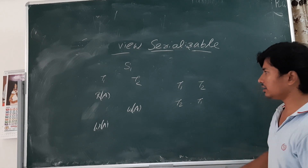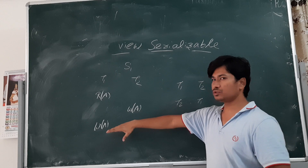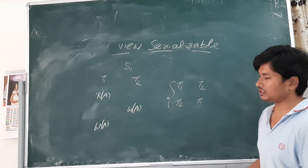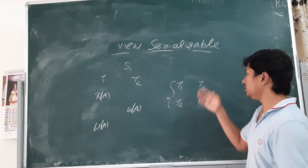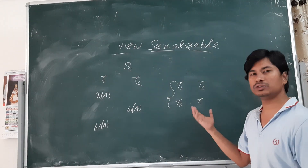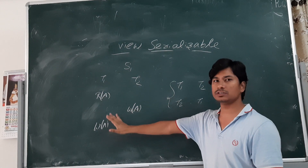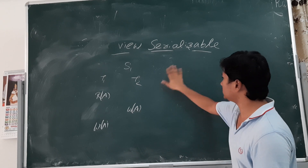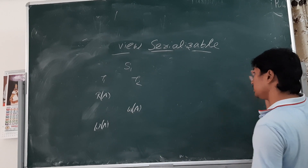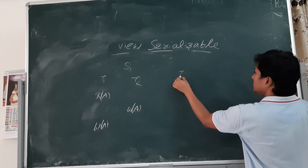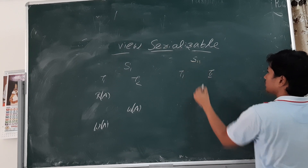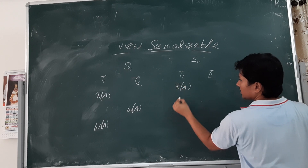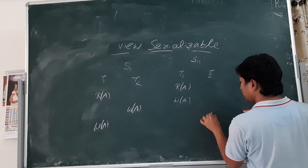A schedule is view serializable if it is view equivalent to any of these two serial schedules — at least view equivalent to one of them. Let me check whether S1 is view serializable. First, we take serial schedule S11 which is T1 then T2: read of A, write of A, write of A — all operations of T1 first, then T2.